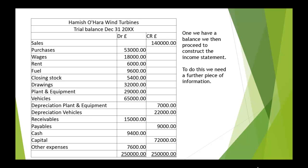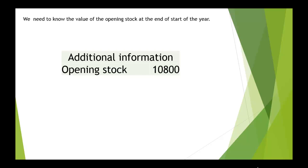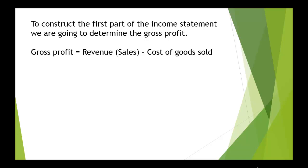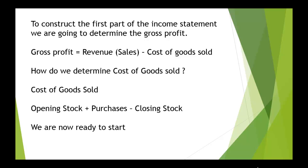The income statement is the first statement we're going to prepare. We're going to need one further piece of information — the value of opening stock at the start of the year, which was 10,800. The first part of the income statement gives us the gross profit. Gross profit equals revenue minus cost of goods sold. The cost of goods sold equals opening stock plus purchases minus closing stock.